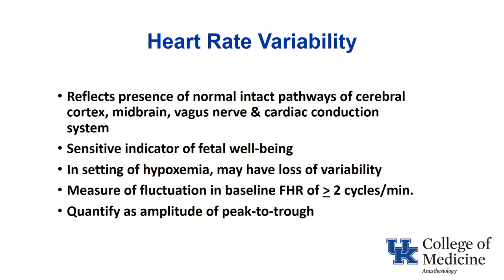Once you've determined if you've got a normal baseline fetal heart rate, you want to look at heart rate variability. This is one of the most sensitive indicators of fetal well-being, which is why you may hear obstetricians say there are some decels but good variability in between, so they're not particularly concerned. Variability indicates normal intact pathways from the cerebral cortex, midbrain, vagus nerve, and cardiac conduction system. In the setting of fetal hypoxemia, you can lose that variability.